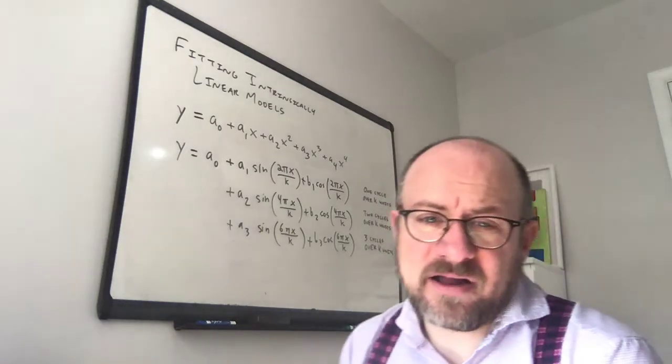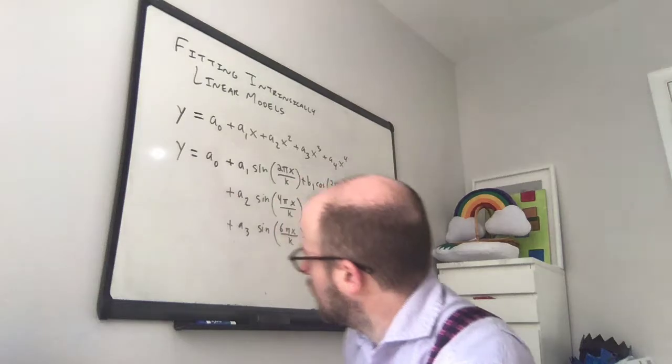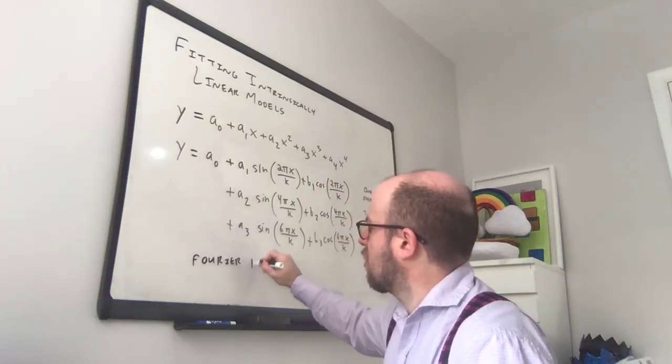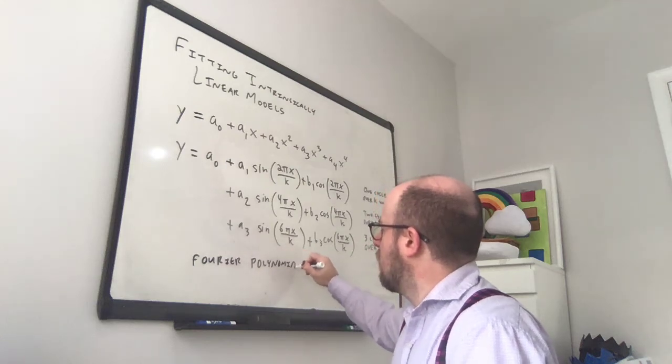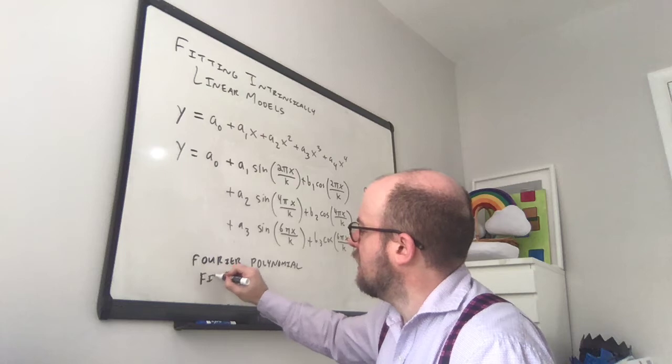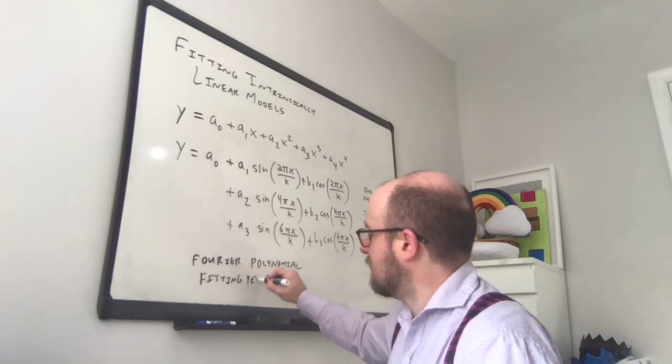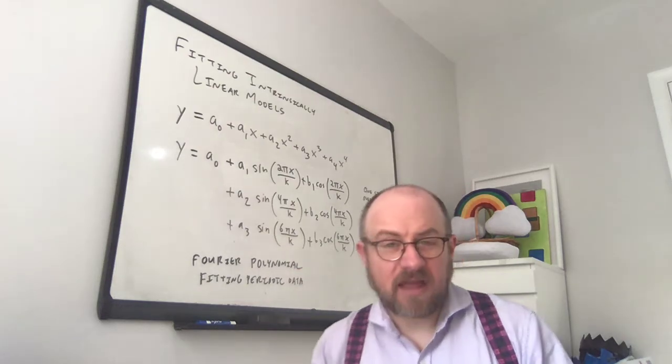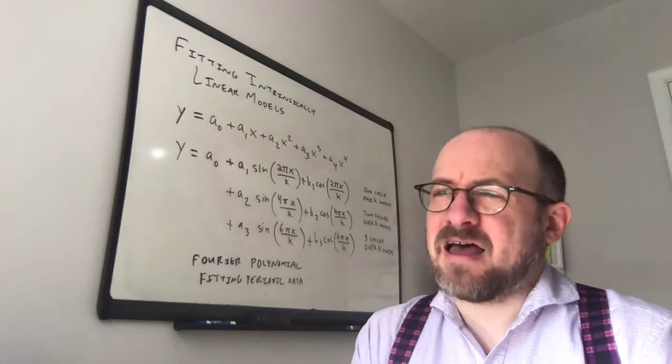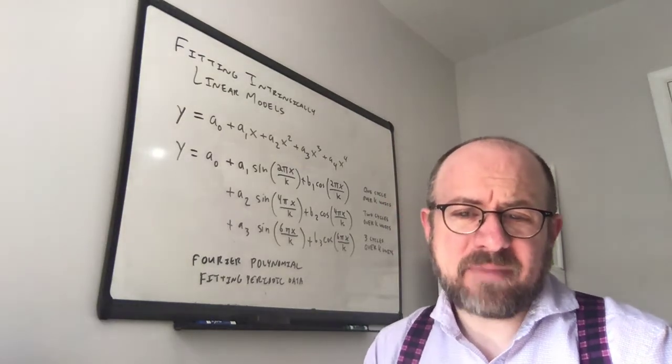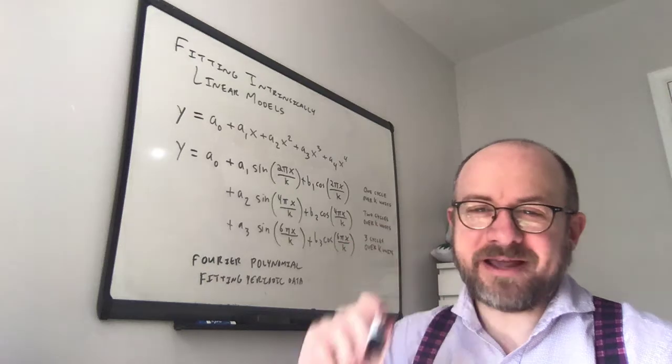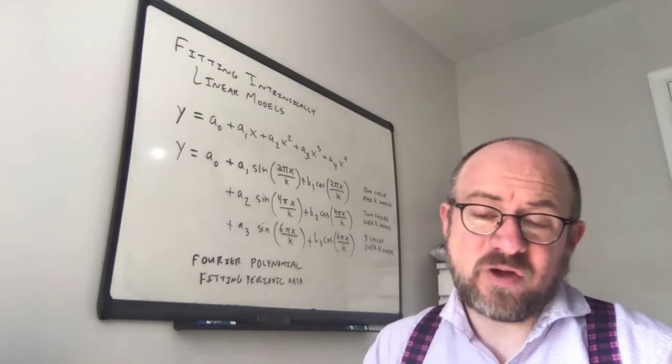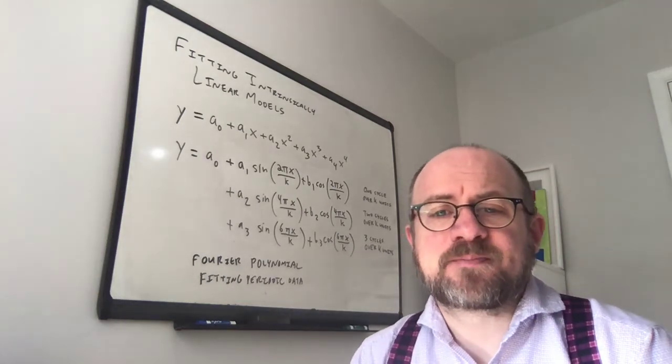The other model I have up here is a little bit more complicated. This is what's called the Fourier polynomial. And Fourier polynomials are for fitting periodic data. So a lot of times you'll find that you have data which has some sort of periodic pattern in it, so like it might repeat every year or every month or something like that. And so Fourier polynomials are really good for this. Trig functions we know repeat every so often, okay?